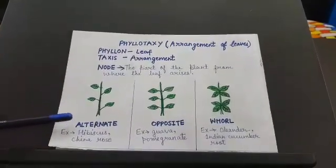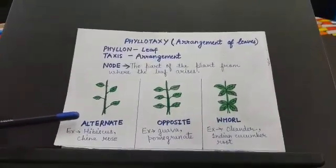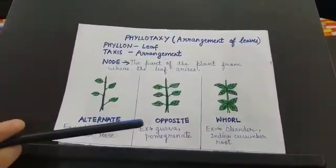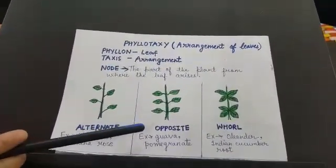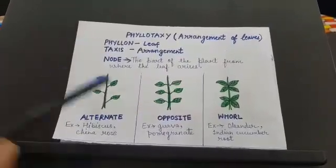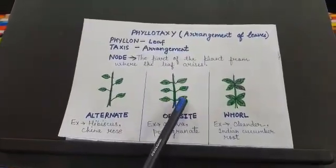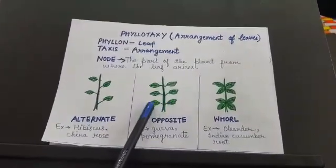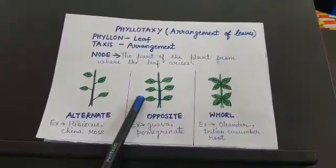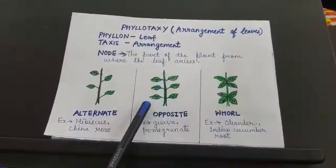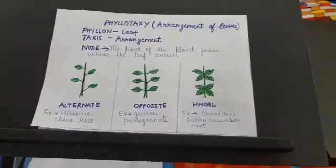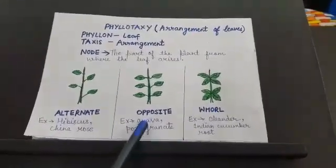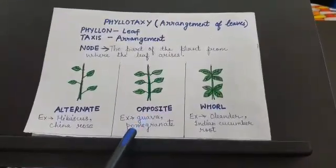Alternate arrangement of leaves can be seen in hibiscus and china rose. Next we have opposite arrangement of leaves. In this, two leaves arise from a single node and they are arranged opposite to each other on the stem. Examples of opposite arrangement are guava and pomegranate.